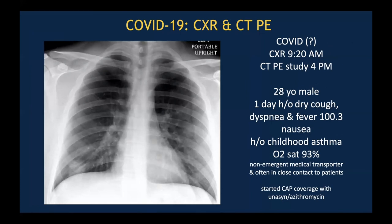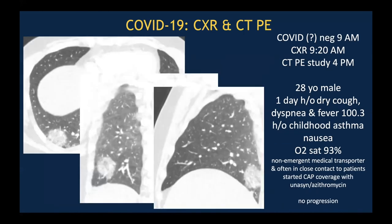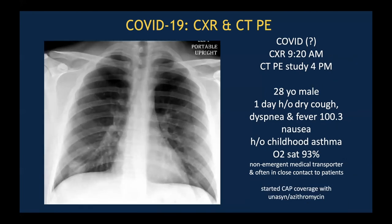Two last cases that point out some confounders. This was a young adult with dry cough, dyspnea, and fever — a medical transporter in close contact with patients, so the concern was high because of potential exposures. This individual was COVID negative. The CT showed one focus of abnormality. Young adults may have rounded pneumonia, and we believe this is a community-acquired rounded pneumonia, not COVID, even though it's rounded.